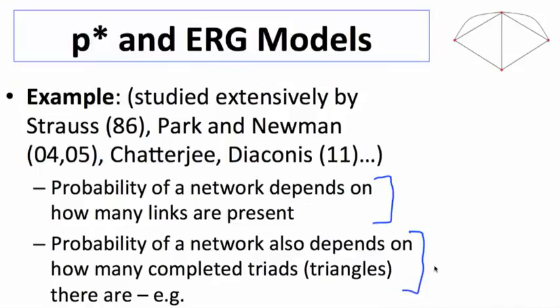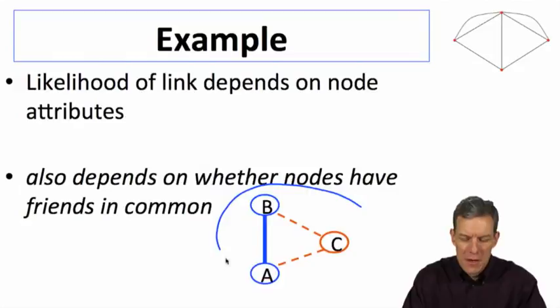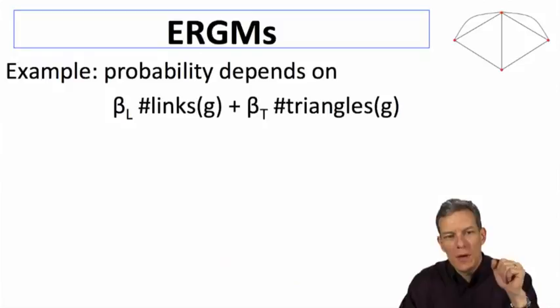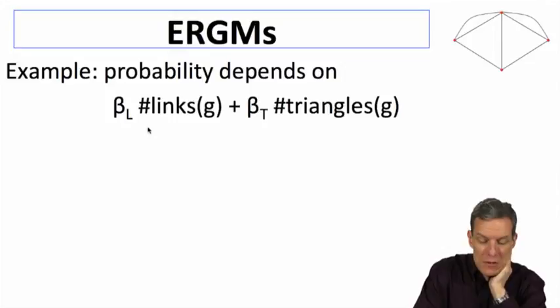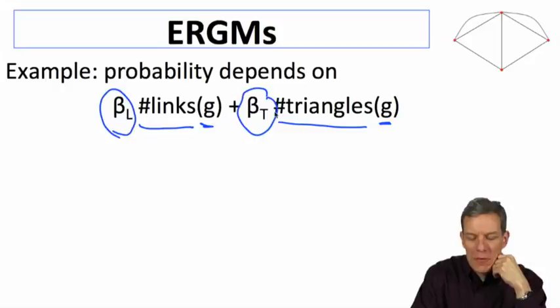The likelihood depends on node attributes and also could depend on whether they have friends in common, so we might want these triangles to be more prevalent than if we just had an Erdos-Renyi style network. Let's think about writing down a model like this. We might want the probability of a network g to depend on how many links it has and how many triangles it has. A simple form would be to say the probability depends on some factors times how many links it has and how many triangles it has.